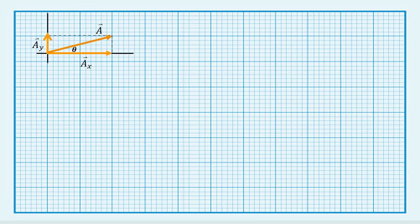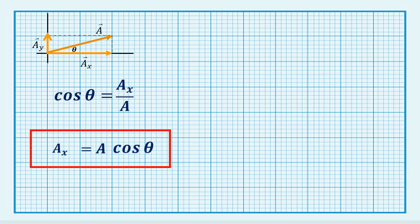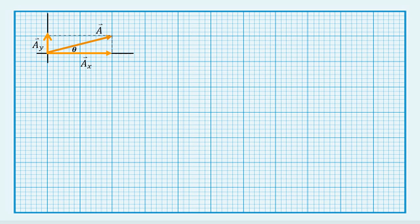If we know both the magnitude and direction of vector A by the angle theta, we can calculate the components. From the definitions of the trigonometric cosine function, cosine theta equals the adjacent side over hypotenuse, and this is equal to vector A sub x over vector A. Rearranging the equation, the component of vector A along the x-axis is equal to vector A times cosine theta. Using the definitions of the trigonometric sine function, we also have sine theta equals opposite side over hypotenuse equals vector A sub y over vector A. Deriving the equation to get the component of vector A along the y-axis, we have vector A sub y equals vector A times sine theta.